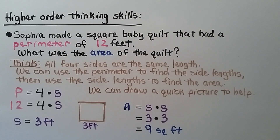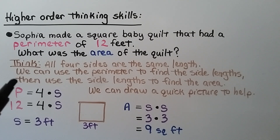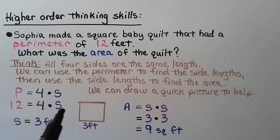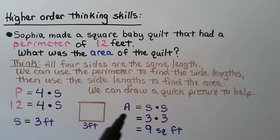Let's try some higher order thinking skills. Sophia made a square baby quilt that had a perimeter of 12 feet. What was the area? Since it's a square, all four sides are the same. Using P equals 4 times s: 12 equals 4 times s, so s equals 3 feet. Then the area equals 3 times 3 equals 9 square feet. We were able to use a given perimeter of a square to find its area.